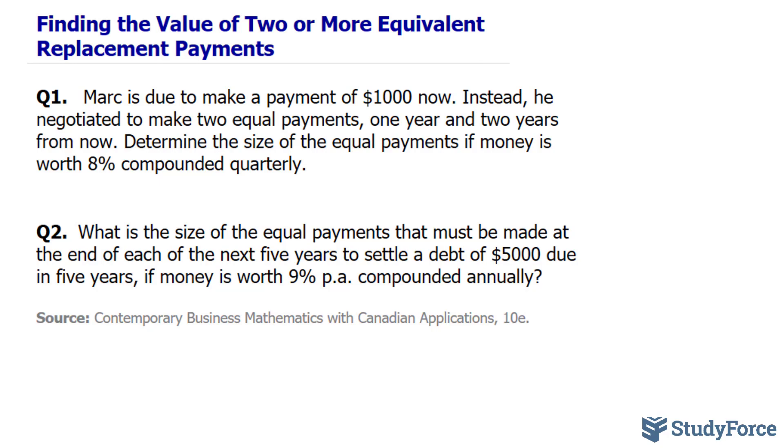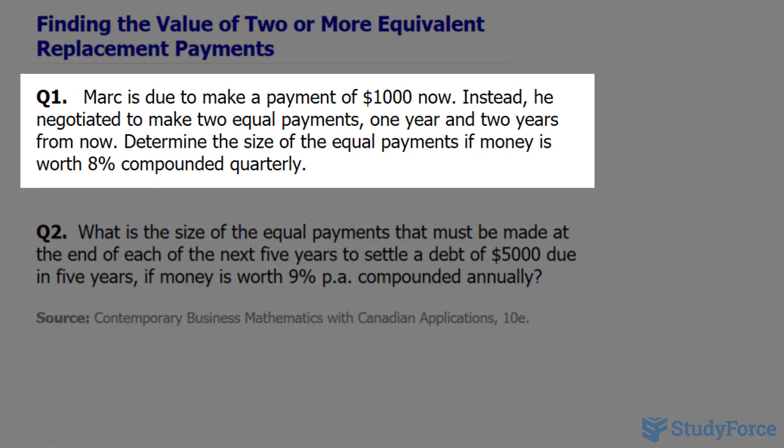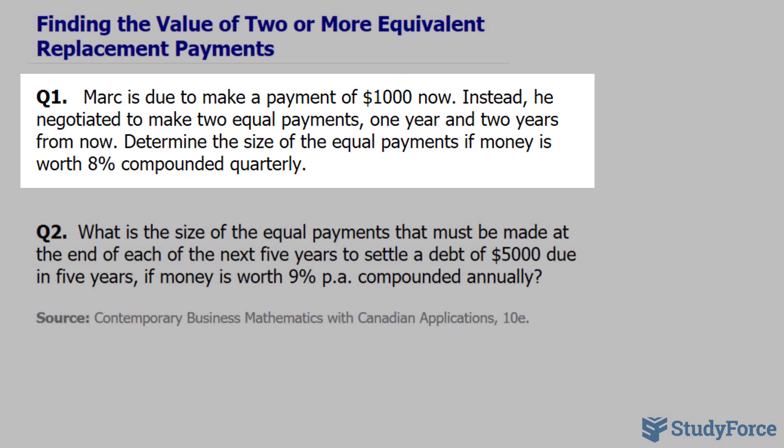Let's begin with question one, which reads: Mark is due to make a payment of $1,000 now. Instead, he negotiated to make two equal payments one year and two years from now. Determine the size of the equal payments if money is worth 8% compounded quarterly.